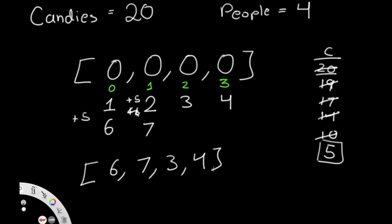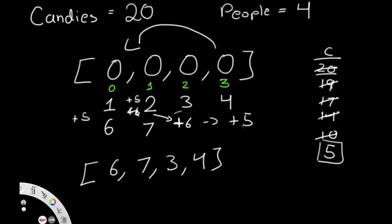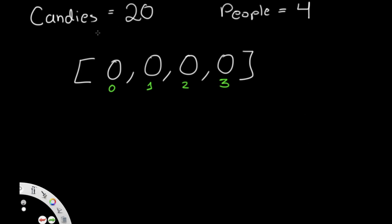So how do we solve this? There are two key things to think about. First, once we reach the last index we need a way to wrap back around to index zero. Second, we need to handle the case where we don't have enough candies — like when we were supposed to give six but only had five. These are the two main challenges. We need our solution to incorporate both.